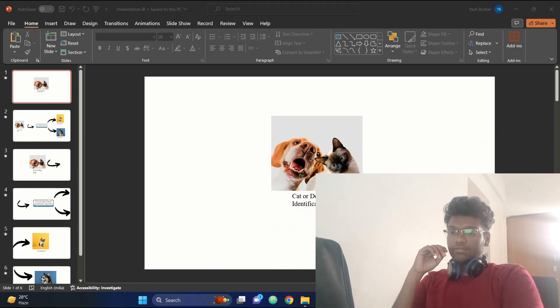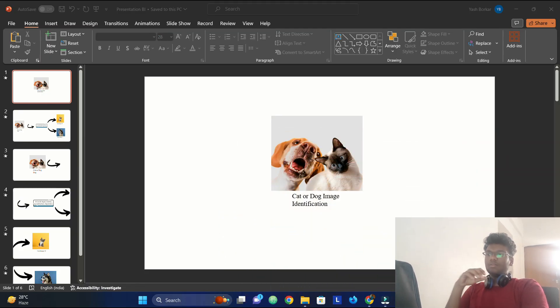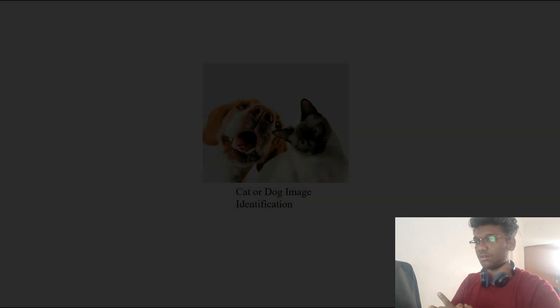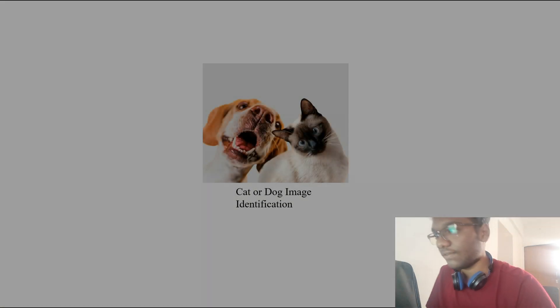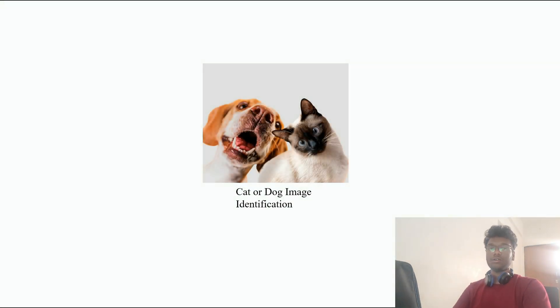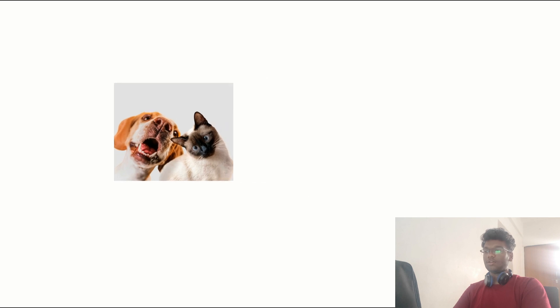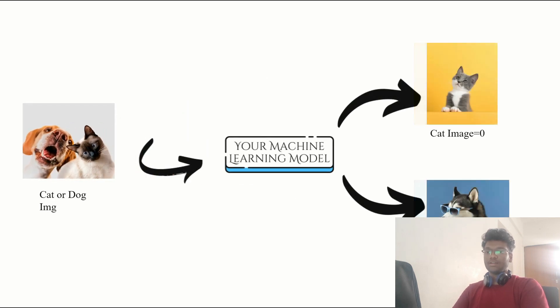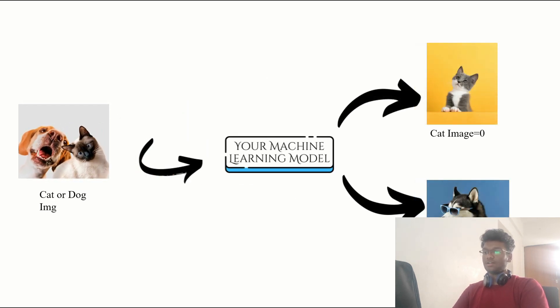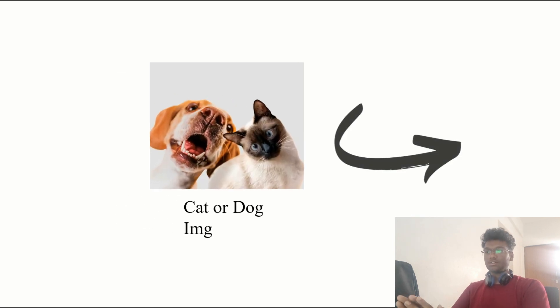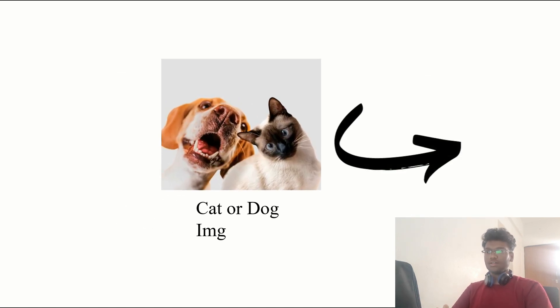This basically concludes how we have trained and tested the model. Once we input an image into the model, it can identify it either as a cat or dog image based on the output — if it's 0, according to our training, you get it in the class of cats; if it's 1, you get it in the class of dogs.